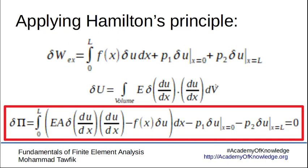Putting all of this into Hamilton's principle — note that the sign of the work and potential energy can be changed since it's all equal to zero — we now have everything in terms of the function u, which is a function of x. This is the Hamilton expression which can be used further to derive the finite element model. Up to this point we haven't used anything approximate; all information we have about the bar is captured exactly.